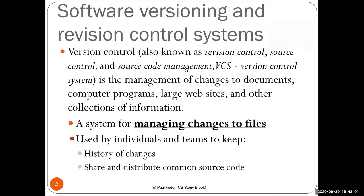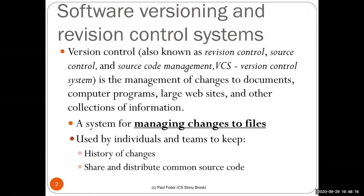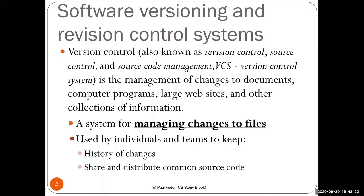Version control is a system for managing changes to files, used by individuals and teams to keep a history of all changes and share and distribute common source code. On general websites for version control like GitHub, you have a way to track all changes and share distributed code between multiple developers, always distributing the most up-to-date version.